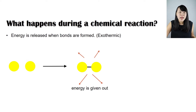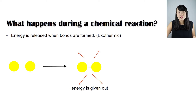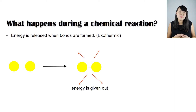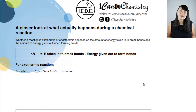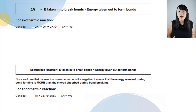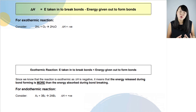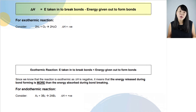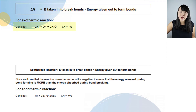If we have two individual atoms and we want to form a bond between them, they will lose energy — that is, energy is given out — resulting in the bond formed between the atoms. So in a chemical reaction, the energy change is determined by the difference between the energy taken in to break the bonds and the energy given out to form the bonds.